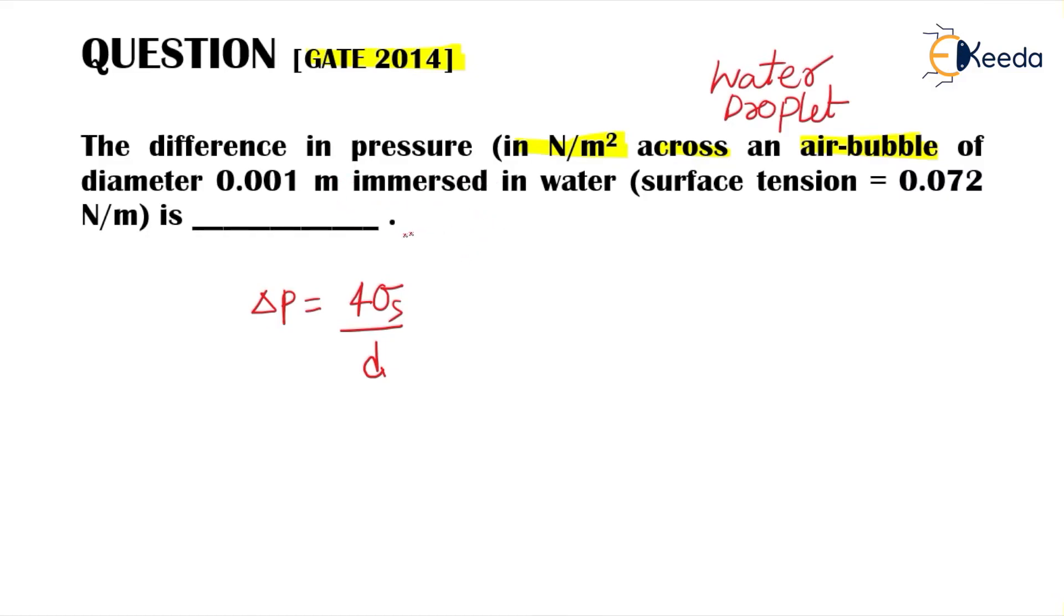They are asking for this value Delta P only. Surface tension is given as 0.072. That is 4 times Sigma S value, 0.072 Newton per meter, divided by the diameter. Now diameter is already given in meter, so just simply put as it is 0.001 meter. So the unit will be Newton per meter square.